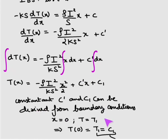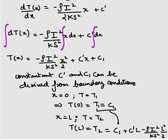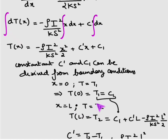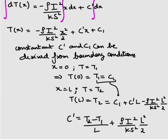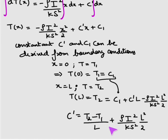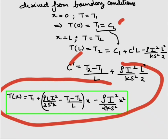The constants C1 and C' are found from the boundary conditions. At x = 0, T = T1, so C1 = T1. At x = L, T = T2, giving T2 = C1 + C'·L minus the source term evaluated at L. From this we get C' = (T2 - T1)/L + rho·I²·L/(2K·s). Substituting C1 and C' back into the equation gives the final expression for the temperature distribution T(x) along the bar.